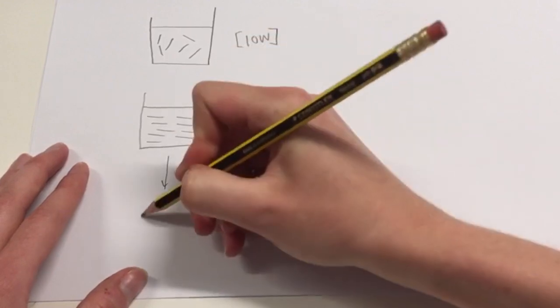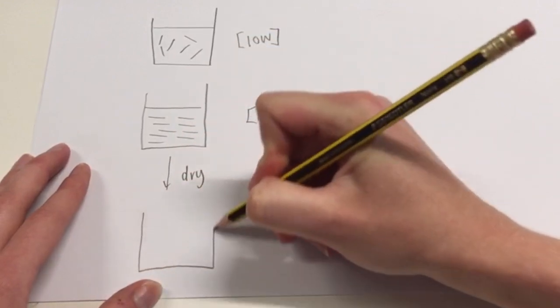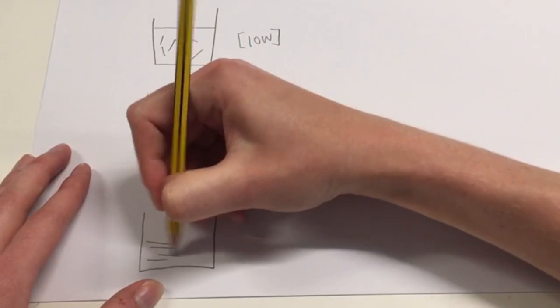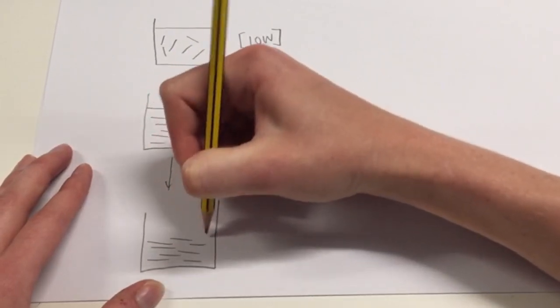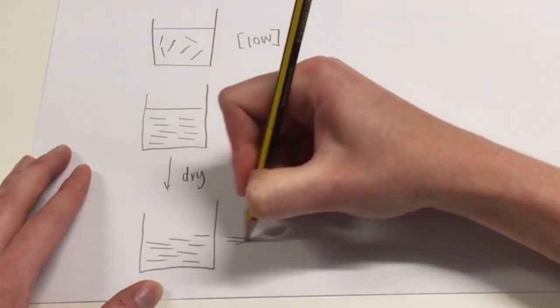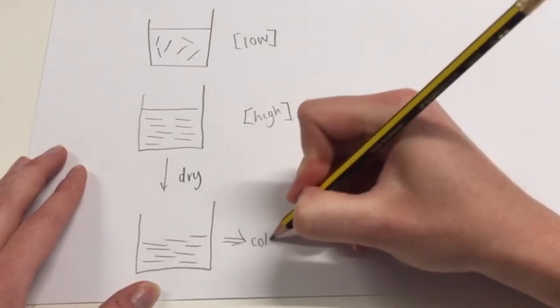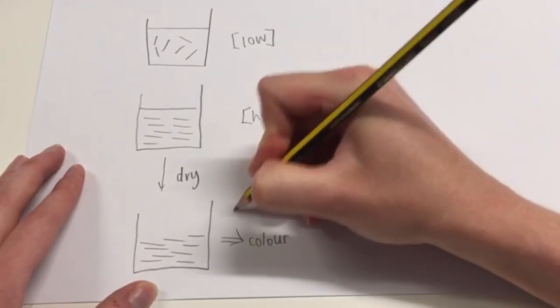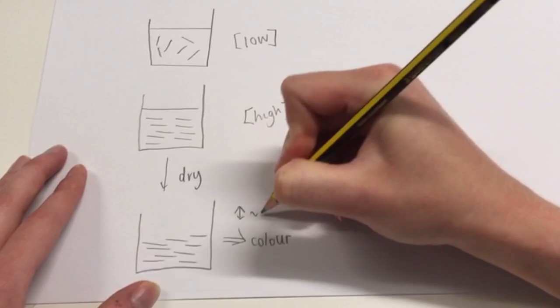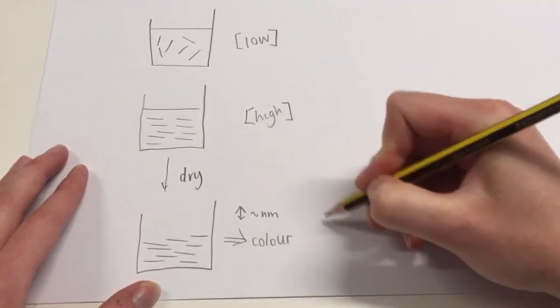Later on, when we further dry the material, what you get is a film that has this multilayer structure that I mentioned before. This is when you start to have color, because now the periodicity decreases to a few hundred nanometres and the light starts to be reflected by this.